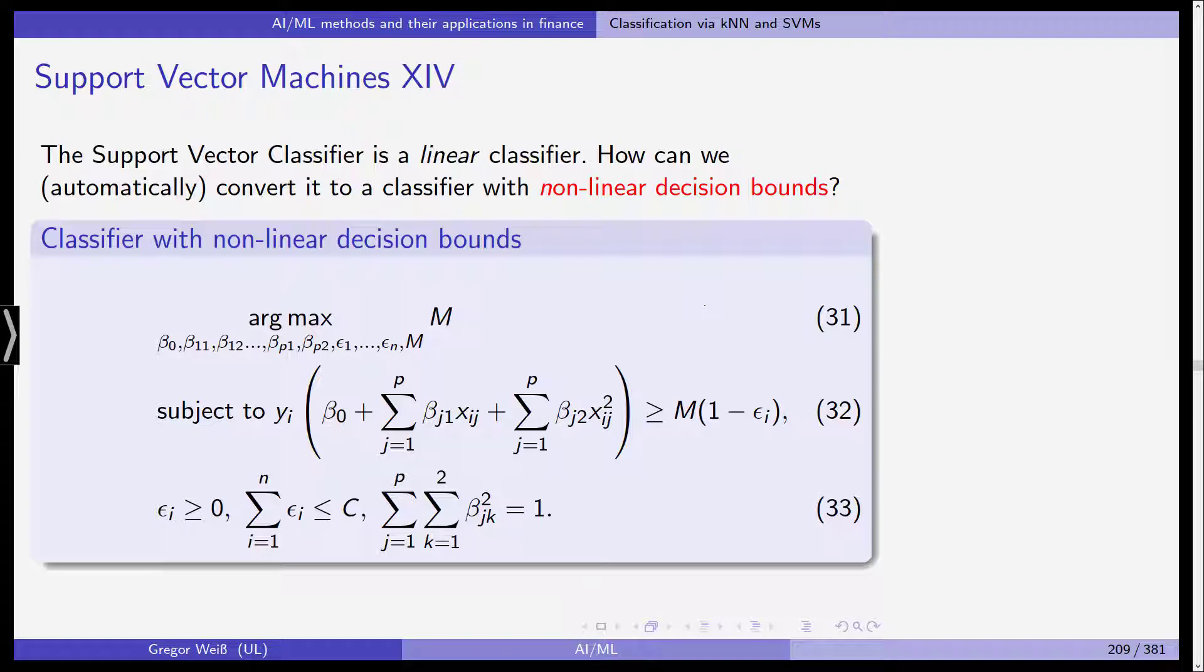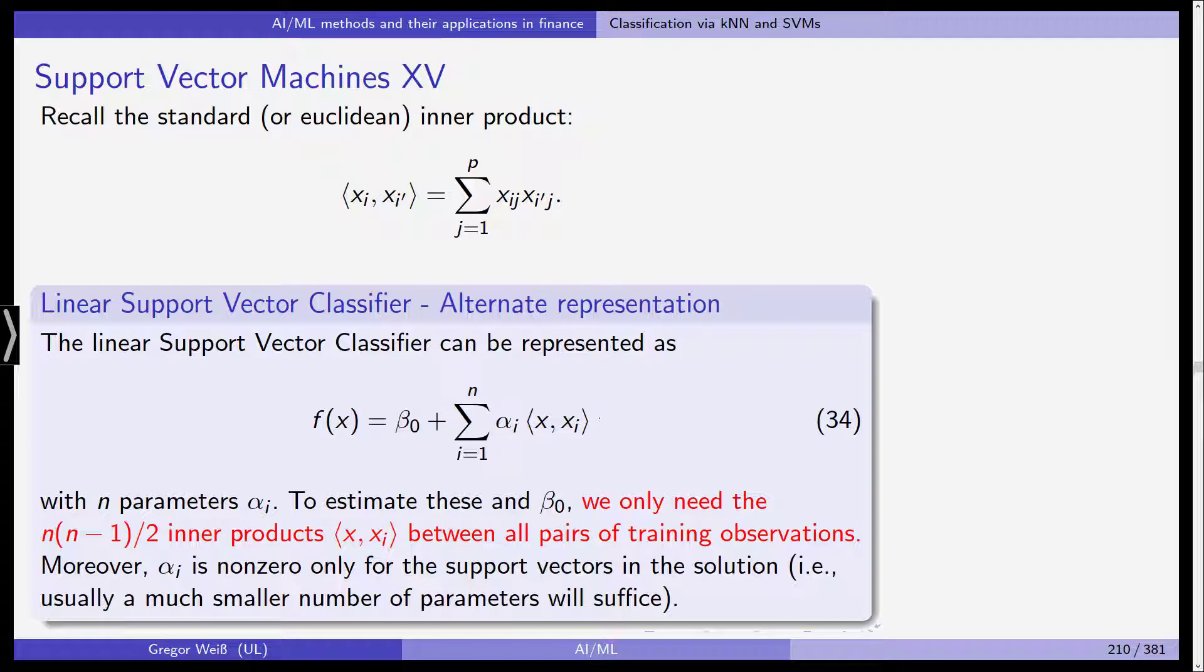First thing we could try is that we, again, maximize the margin. We use the betas, the epsilons, and m as our parameters, and we now say, okay, we are not using a hyperplane, but, for example, as you can see here, this is, again, the response being minus one or one, the margin, and we allow a certain error in the slack variables. But here, in parentheses, where previously we had a linear hyperplane, we now allow what is a polynomial function. So, just like we did with polynomial regression, we allow the decision boundary to be a polynomial one, and this is one way of doing it.